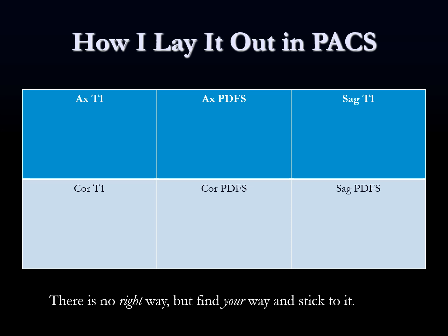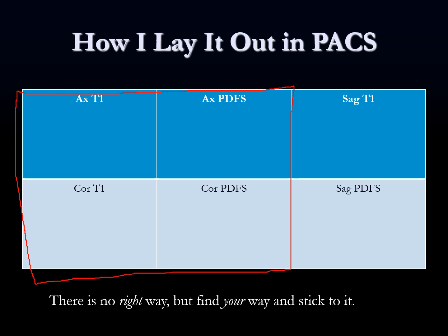This is how I lay out the wrist MRI in PACS most of the time — it's six sequences that you want to hang. There is definitely no right way to do this, but I would advise you to just sit down with your first case and think about what makes most sense, and then just be consistent about it — hang it the same way every single time. I put these six sequences up typically on a four-by-four screen.